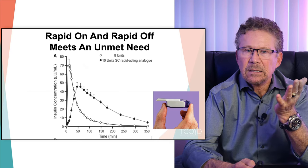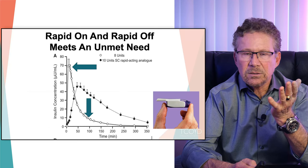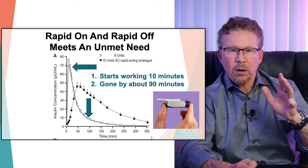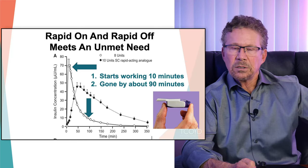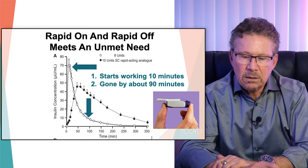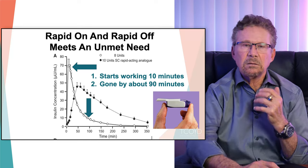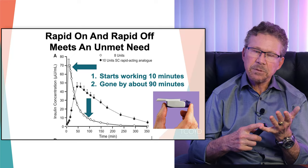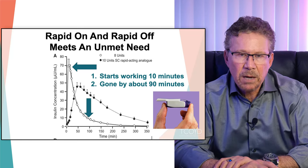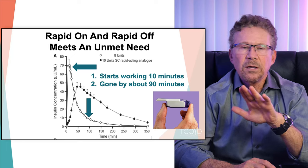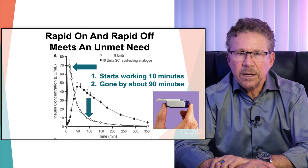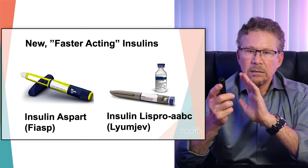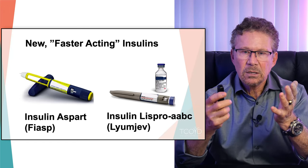How do you prevent post-meal highs? Afreza is key — it works faster and gets out of your system faster. It works within 10 minutes and lasts no longer than 90 minutes. You can use it before a meal that's high in simple carbohydrates, with every meal, or just for correcting a high blood sugar. It's the rare patient that doesn't love it, but not every doctor has heard of it and prescribing can be a pain. If your healthcare system doesn't know how to prescribe Afreza, go to the Afreza website. There's also the faster-acting Aspart, which is faster on and faster off than Novolog, and Lyumjev, a faster-acting lispro — both approved for insulin pump therapy.